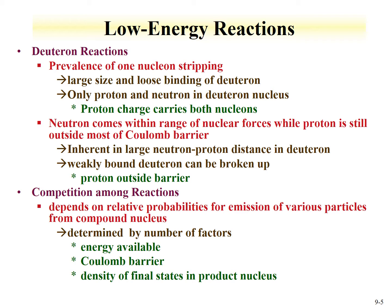Other low energy reactions with light projectiles include deuteron reactions. With deuterium — one proton and one neutron in the nucleus — you can think of the proton as carrying the neutron around. This is essentially a way of accelerating a neutron by exploiting the fact that the neutron is connected to a proton. Some reactions can occur where the neutron penetrates the nuclear barrier while the proton is still outside most of the Coulomb barrier, due to the inherently large neutron-proton distance in deuterium. This weakly bound nucleus, H-2, can be broken up.